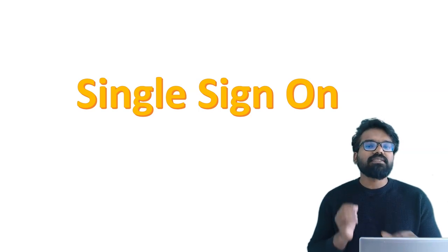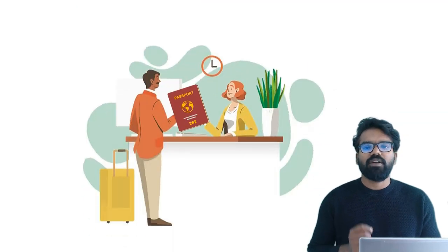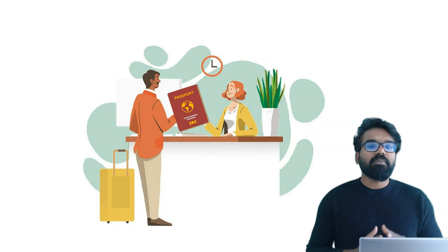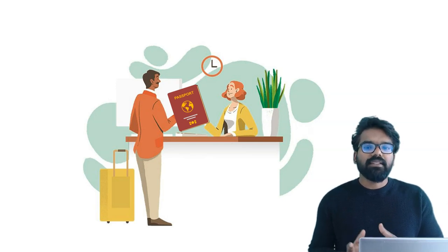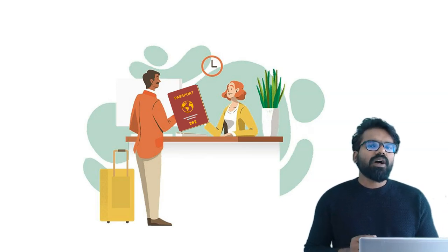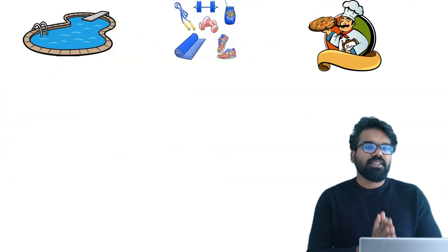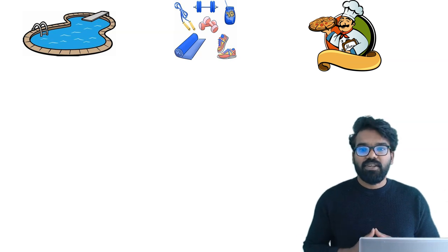I am going to start with a very simple example. Let's say you are going for a vacation and you are checking into a hotel. During the check-in process, the receptionist will be verifying your ID card and verifying your identity before letting you in. Now let's say you have successfully checked in and you find a lot of resources in the hotel — for example, a swimming pool, a restaurant, and a gym.